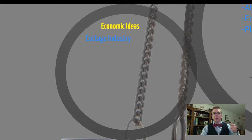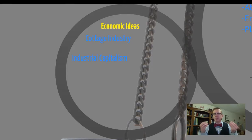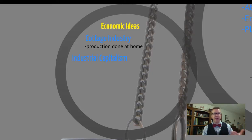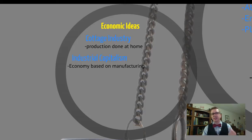Let's turn now to some new economic ideas. We've got cottage industries — that's the old system — versus industrial capitalism, the new system. Both are built on that idea of mercantilism, that a country's power is based upon its wealth. Cottage industry is production done at home — traditionally the woolen industry in England, northern Germany, and Ireland, with spinning and weaving of cotton for clothing done at home. Industrial capitalism is very different. This is an economy based on manufacturing — the factory system — moving production out of the home and into factories where it can be done on a larger scale with more control.